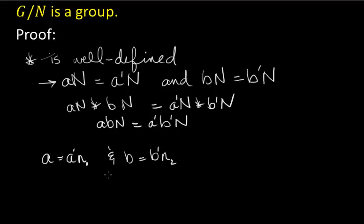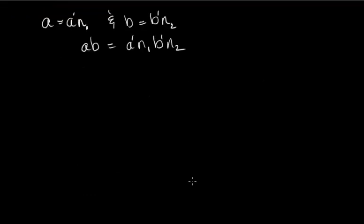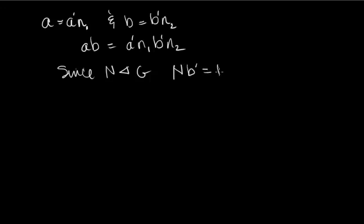With this we can say that AB equals A prime N1 times B prime N2. Now here's the part of the proof where we're going to use the fact that N is normal. Since N is a normal subgroup of G, we know that the coset N B prime is the same as the left coset B prime N — the left cosets are equal to the right cosets. So little N1 B prime can be written as B prime times possibly some other element of N, which I'll call N3.